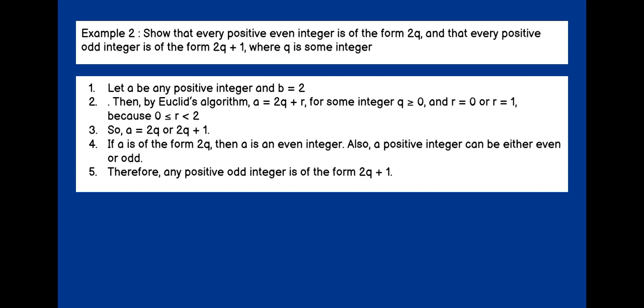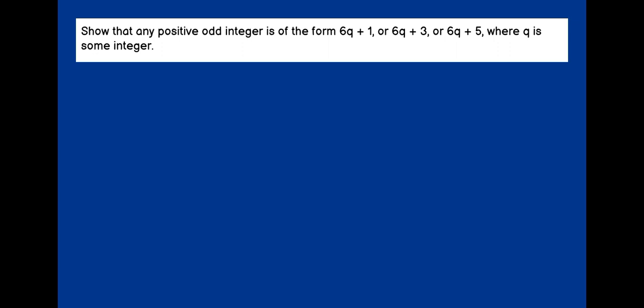If A is in the form of 2Q, then A is an even integer. Because when I divide 2Q by 2, it is divisible. I will get Q as the answer. Therefore, a positive integer can either be even or odd. Therefore, any positive odd integer can be in the form of 2Q plus 1. Because when I divide 2Q plus 1 by 2, I am not able to divide it. Because I have plus 1 also here.